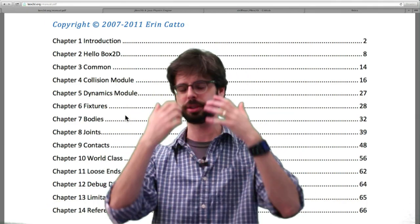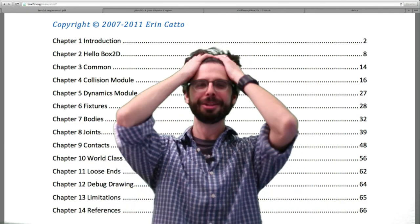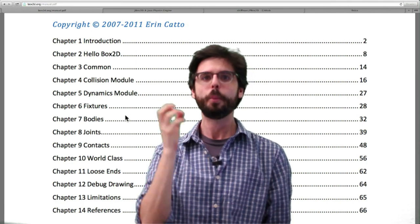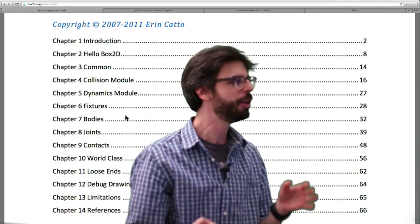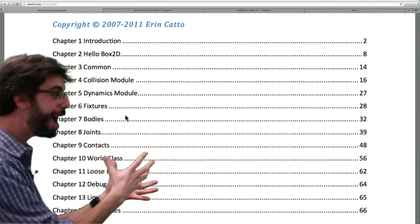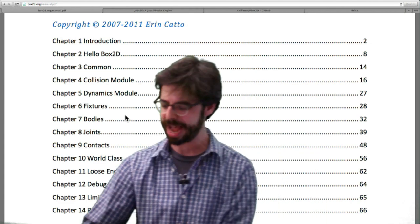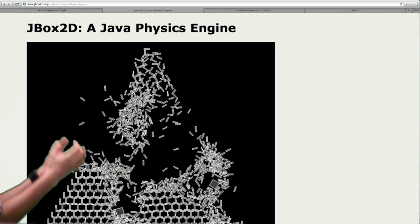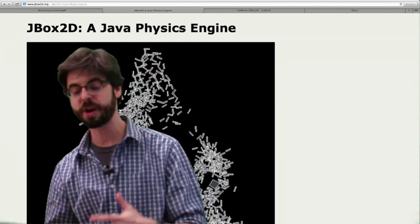There's a JavaScript version. There's a Flash version. There's probably, I can't even, anything you can imagine, there's probably a version. Now, processing is built, as you may well know, is built on top of Java. So if we could just find a Java version of Box2D, we could probably use it in processing. And in fact, there is one. So if you go to jbox2d.org, you'll find a Java physics engine. This is a port of the Box2D library for Java.